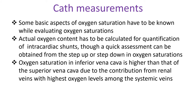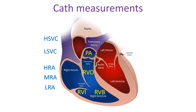Some basic aspects of oxygen saturation have to be known while evaluating oxygen saturations. Actual oxygen content has to be calculated for quantification of intracardiac shunts, though a quick assessment can be obtained from the step up or step down in oxygen saturations. Oxygen saturation in the inferior vena cava is higher than that of the superior vena cava due to the contribution from renal veins, which have the highest oxygen levels among the systemic veins. Two IVC samples, one above and another below the renal veins, named high and low IVC, are taken sometimes.